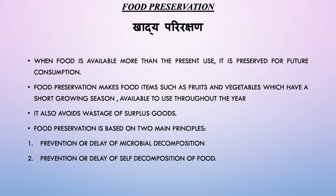The first application of food science which we are going to study is food preservation, also known as khadye parirakshan. When food is available more than the present use, it is preserved for future consumption. Food preservation makes food items such as fruits and vegetables which have a short growing season available throughout the year, and also avoids wastage of surplus goods. Food preservation is basically based on two main principles: first, prevention or delay of microbial decomposition; and second, prevention or delay of self-decomposition of food.